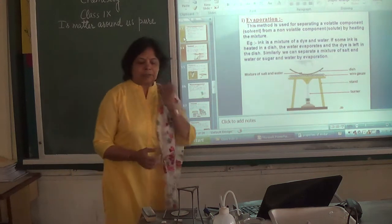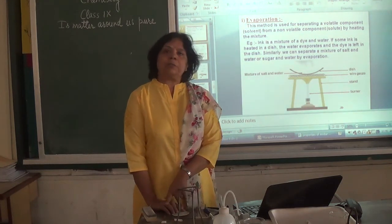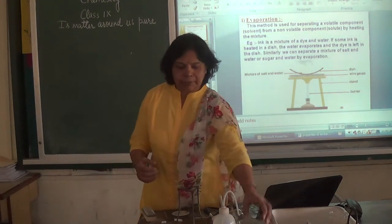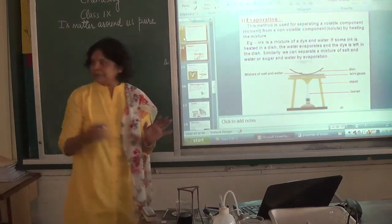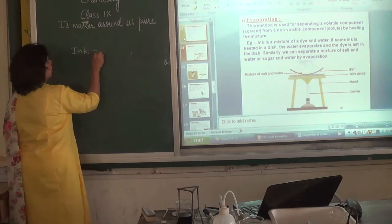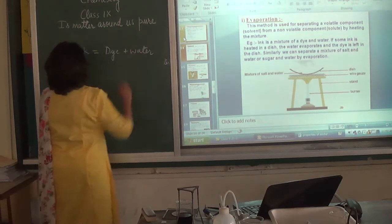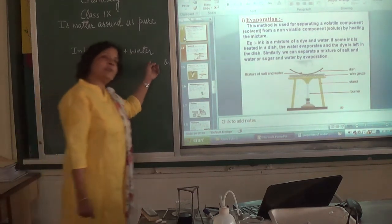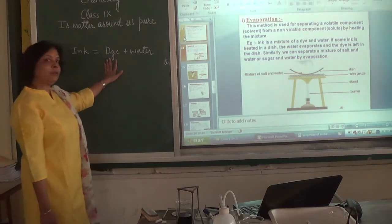Evaporation — as you have already studied, when a liquid is heated, it changes into vapor at temperatures below the boiling point; that process is called evaporation. For example, ink is a mixture of dye in water. In this mixture, one component actually changes into vapor on heating — we call such a component the volatile component. The other component does not change into vapor — that is the non-volatile component.